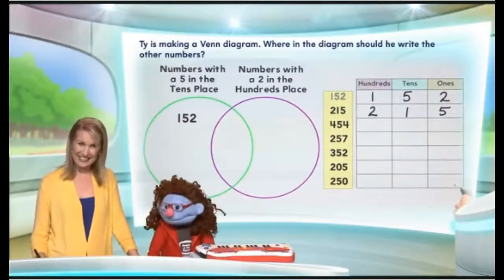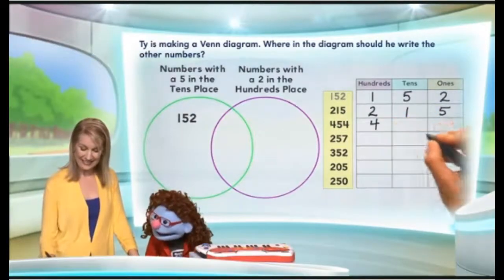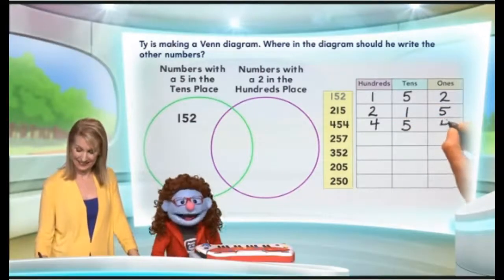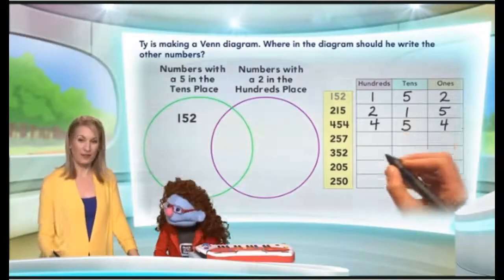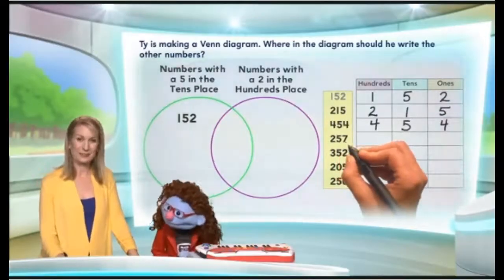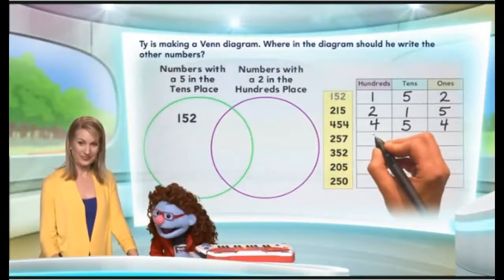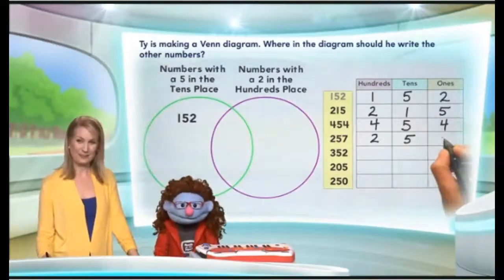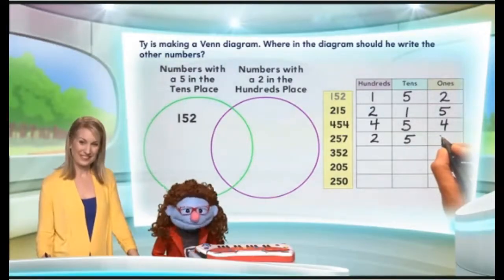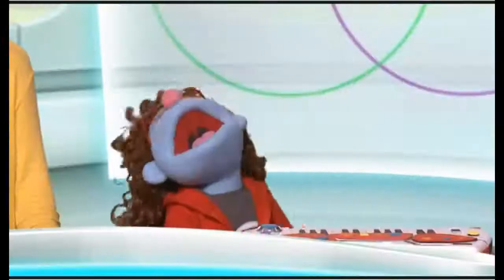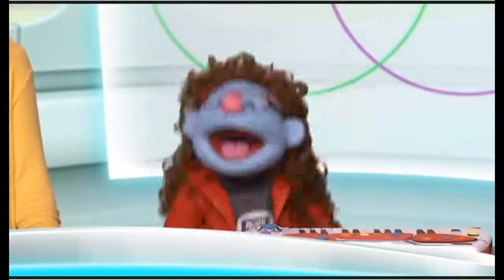So there's a four in the hundreds place, a five in the tens place, and another four in the ones place — and that is 454. Good job! Now we have 257. So there's a two in the hundreds place, a five in the tens place, and a seven in the ones place. Very good! I like it! I love math!